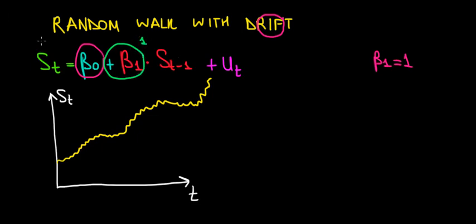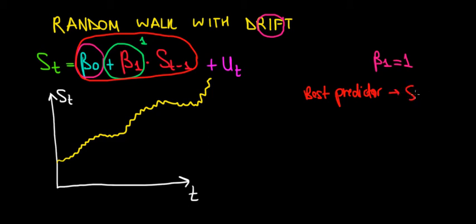How do we interpret this? With the same logic, the best predictor for sales in the current period is now sales in the previous period plus the constant. So the best predictor for sales at time t equals beta 0 plus sales at t minus 1. What is beta 0 telling us? Beta 0 is increasing the value of sales at t minus 1.